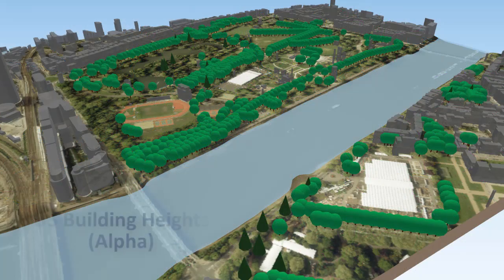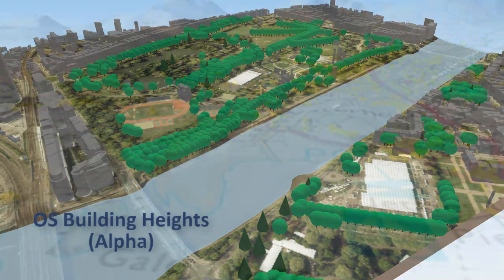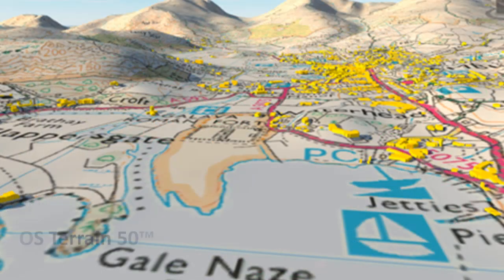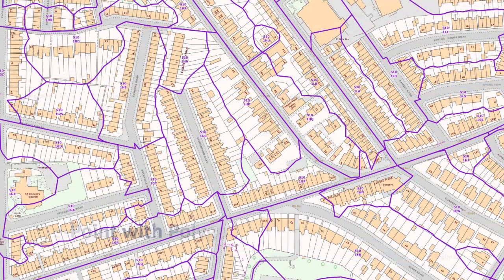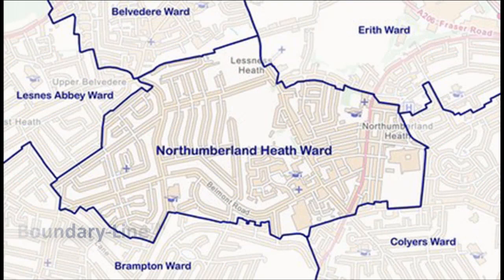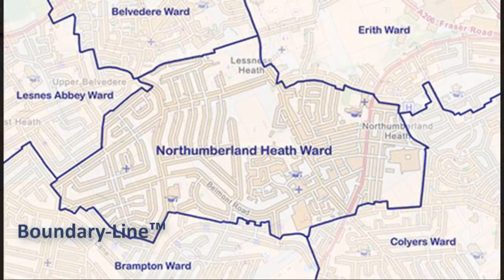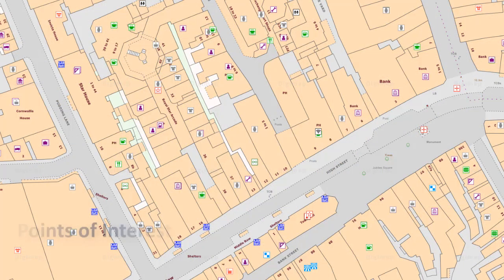Users can access building height data and digital terrain models for 3D modelling. Postcode data, administrative and electoral boundaries, and points of interest data are also available.